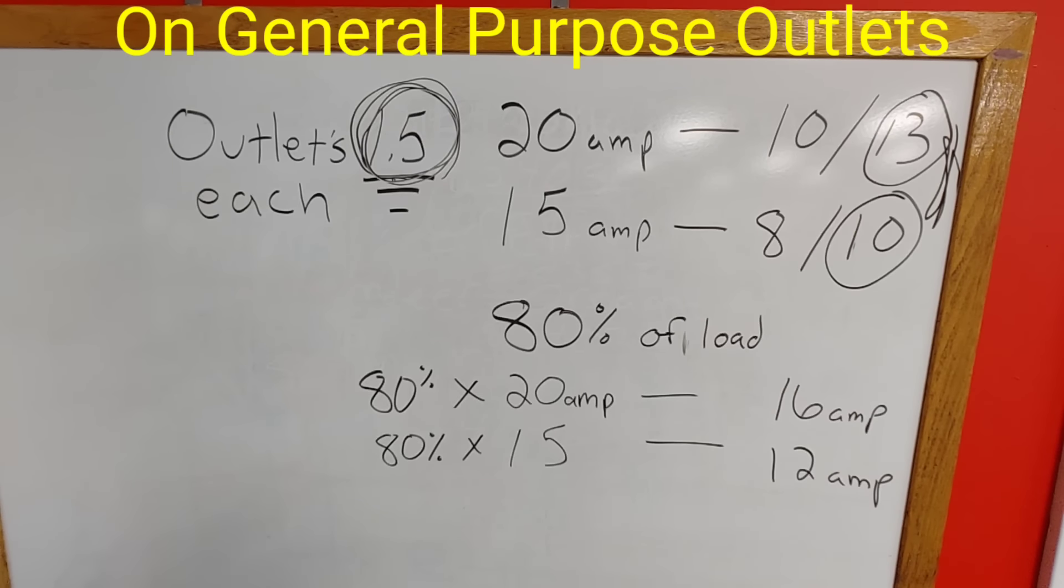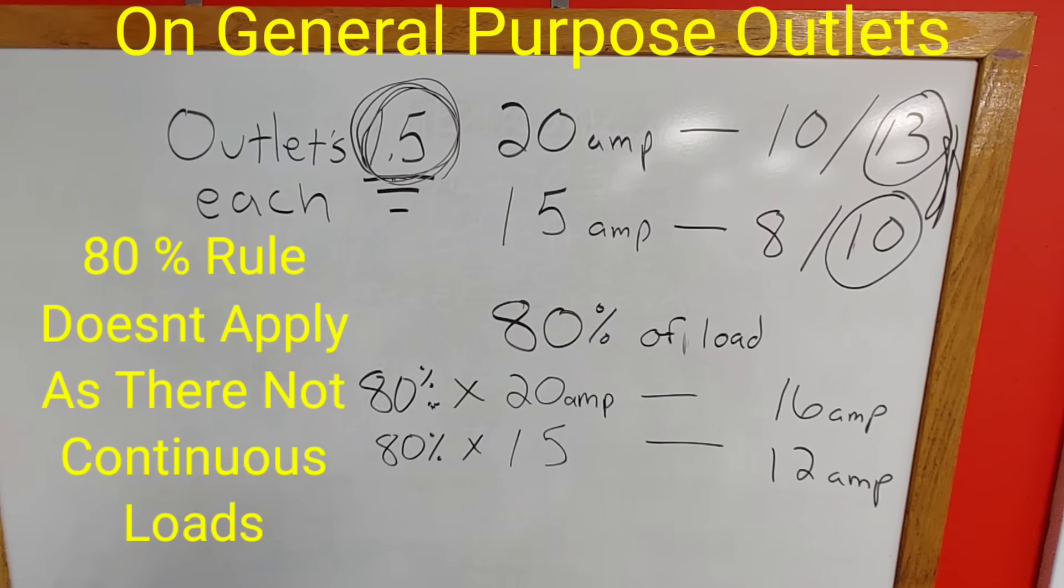But some people will also tell you, hey wait a minute, you can only use 80% of the load of that circuit. So 80% of a 20 amp circuit is 16 amps. 80% of a 15 amp circuit is 12 amps.